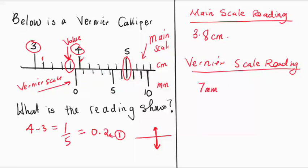Now the Vernier scale is always multiplied by the accuracy of a standard Vernier caliper, which is 0.01 centimeters. And we are going to get 0.07 centimeters, which should be added to the main scale reading.